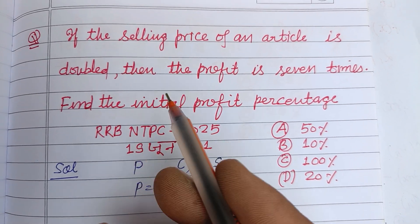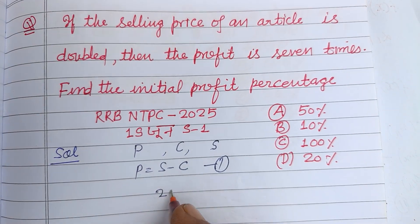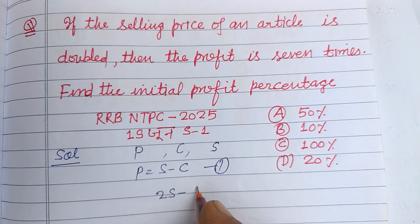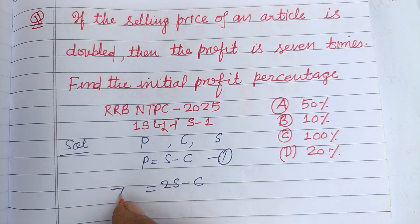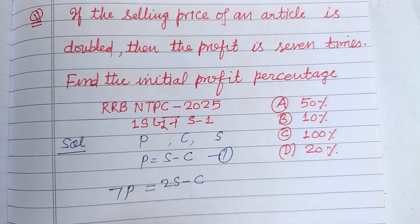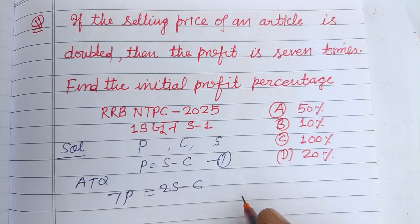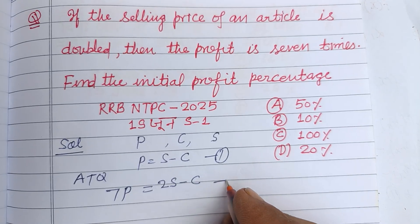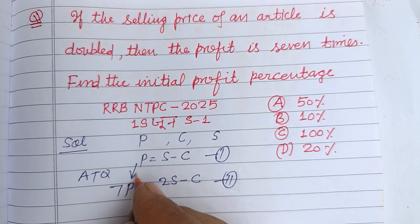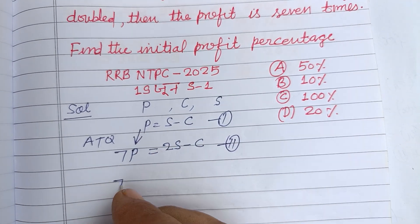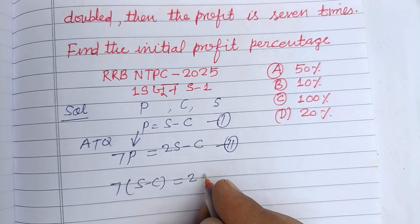The question says the selling price is doubled, so the new selling price becomes 2s. The new profit is 2s − c, and this is seven times the original profit. So according to the question: 2s − c = 7p = 7(s − c).